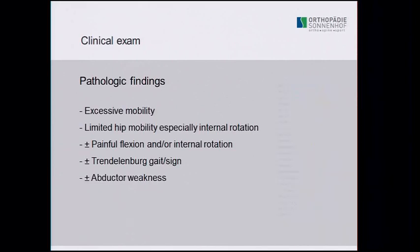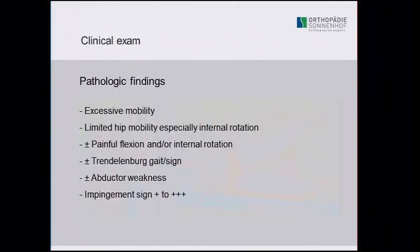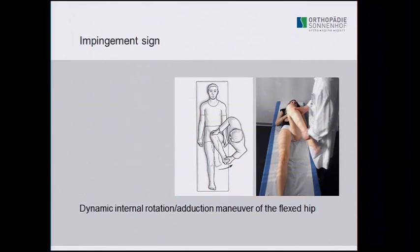Instead, we look for abductor weakness. We position the patient in a completely extended hip, flex the knee to about 30 to 45 degrees, and place the trochanter in the highest position by internal rotation. We then ask the patient to withstand our force on the lower leg. There is often a big difference between sides. Sometimes even young patients cannot maintain this position for five to ten seconds, indicating very weak abductors.